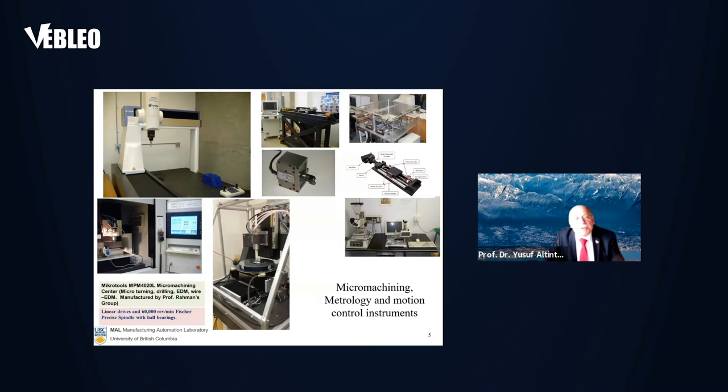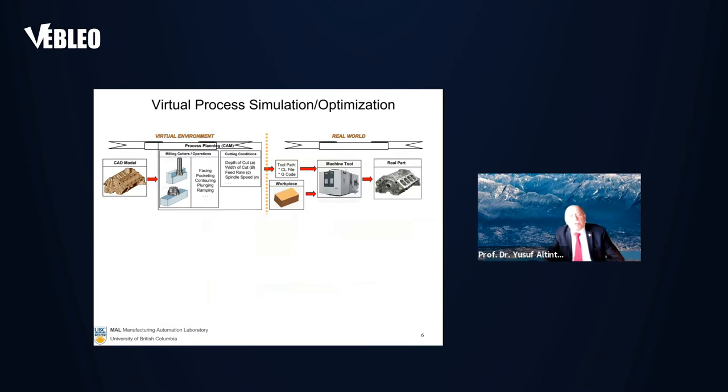In traditional manufacturing, the engineers take the CAD model, bring it to the CAM system, and they design machine strategy and generate NC toolpath and load it on the machine here, machine the part.